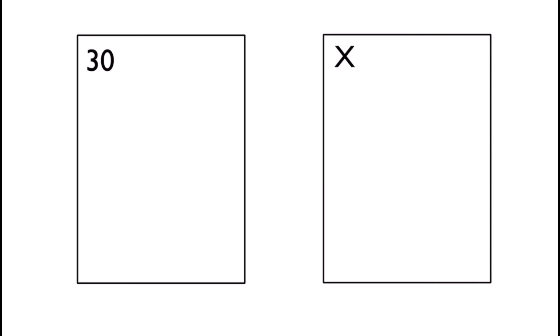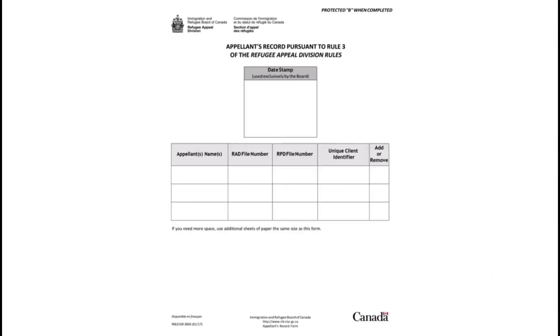The completed form should not be more than 30 pages long, and any information that does not fit within the form should be provided on additional pages. Let's look at the form. The first page is a cover page.